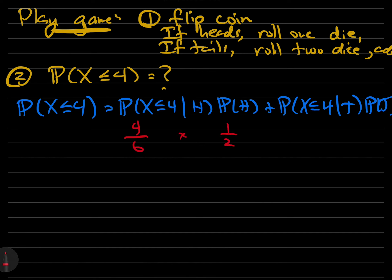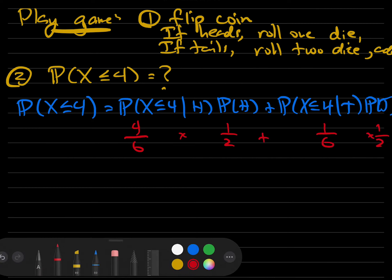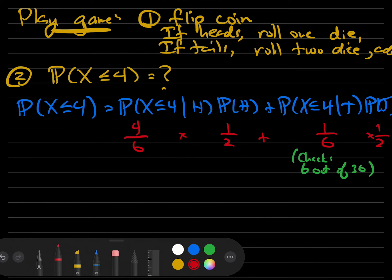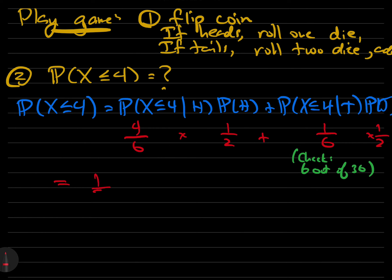The probability of heads and tails are each one-half. The probability that X is less than or equal to four given heads is the probability that a single die rolls less than or equal to four, which is four out of six. The probability that two dice added together sum to less than or equal to four — there are actually six ways that can happen — so the probability is one over six. Adding all those together, the total probability of having a score less than or equal to four is five-twelfths.